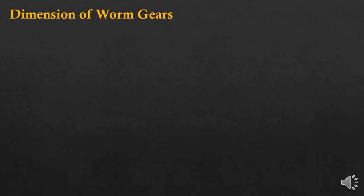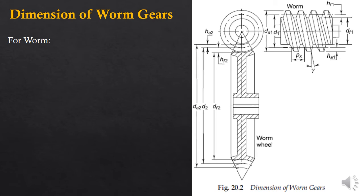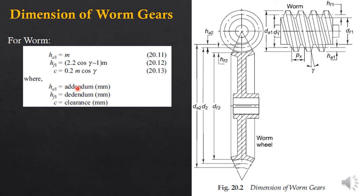Now let's look into dimensions of worm gears. When you need to design or manufacture the gear you need to know the dimensions. The worm is denoted by suffix 1 and the worm wheel by suffix 2. For the worm you can see hf1, addendum a1, the pitch circle, root diameter df1, and addendum diameter da1. The formulas shown include pitch px and lead angle gamma. The addendum is equal to the module, and these formulas are derived from the geometry.